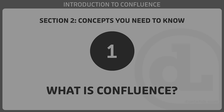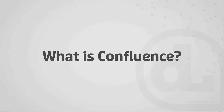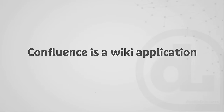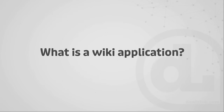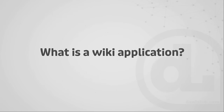In this video, we'll take a minute to get a better understanding of exactly what Confluence is and what it's used for. Confluence is a wiki application. That's going to beg the question: what is a wiki application? In a nutshell, a wiki application — sometimes called wiki software or a wiki engine — is software that's specifically designed for collaborative editing using only a web browser. You don't have to install any special software in order to get this to work.